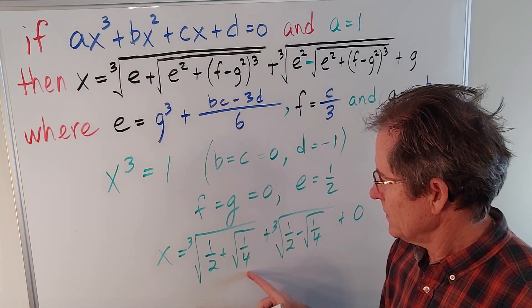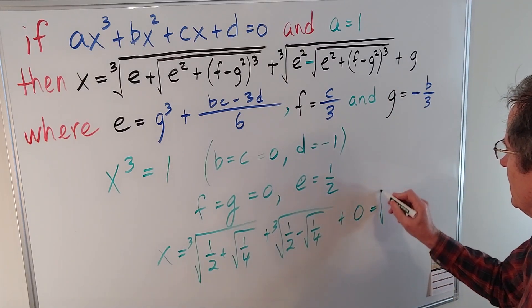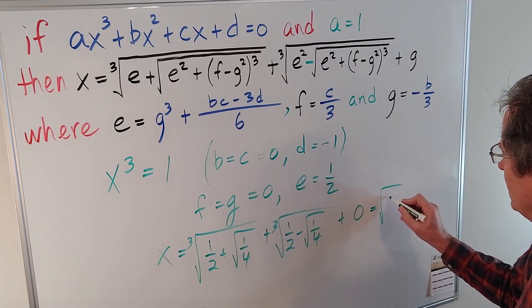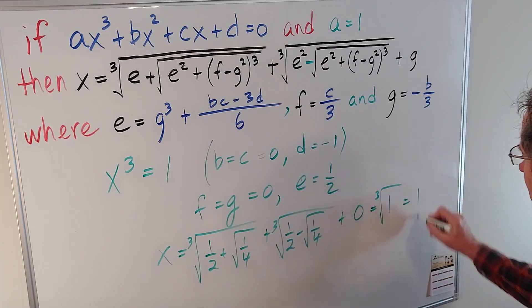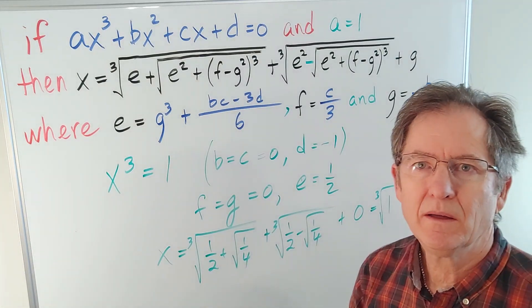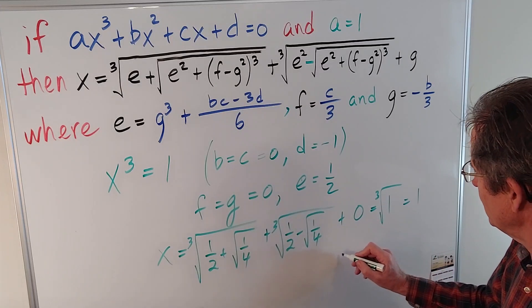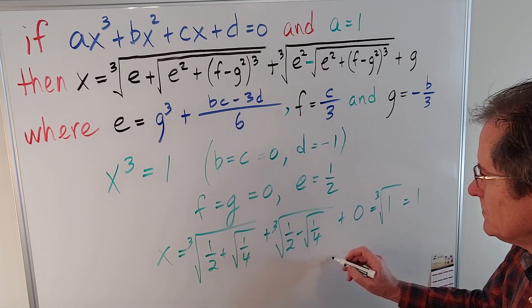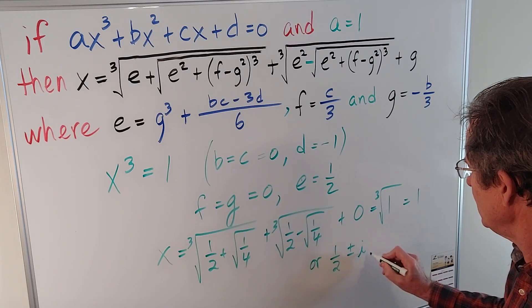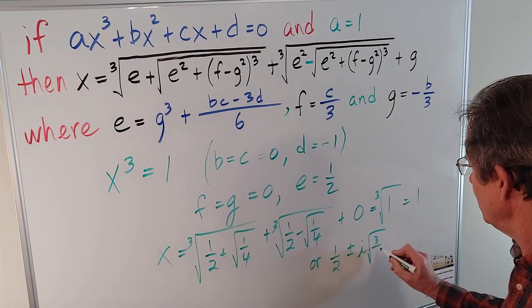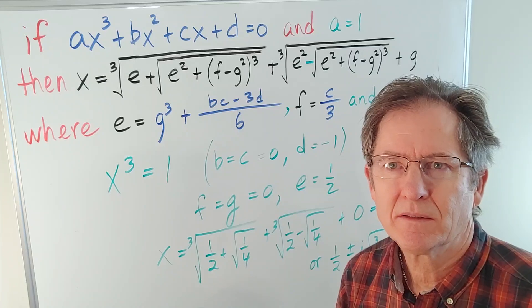Of course, the square root of a quarter is a half. So I'm going to get the cubed root of 1 plus 0 plus 0. Well, we all know that 1 is a solution. But there's two other solutions because it's a cubed root. The other two solutions are 1 half plus or minus i times the root of 3 over 2. And as I mentioned before, maybe I'll explain that some other time.